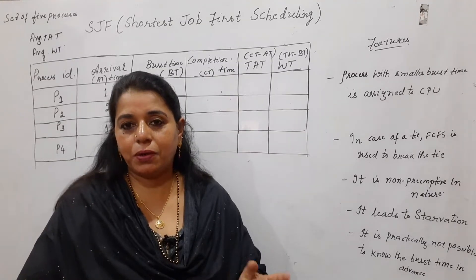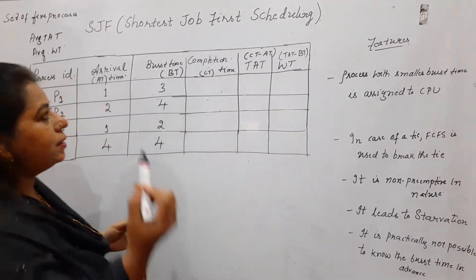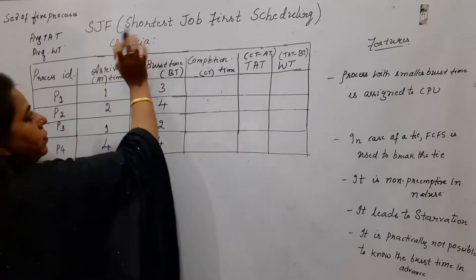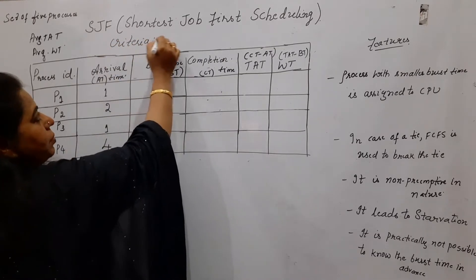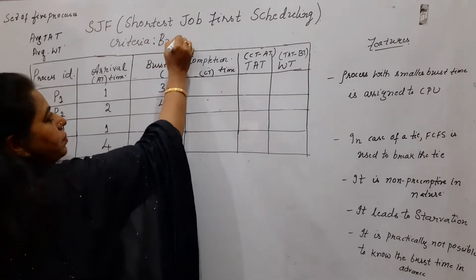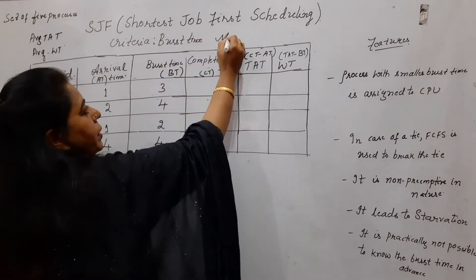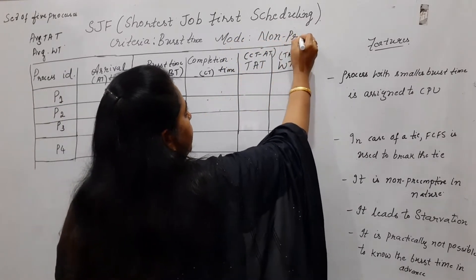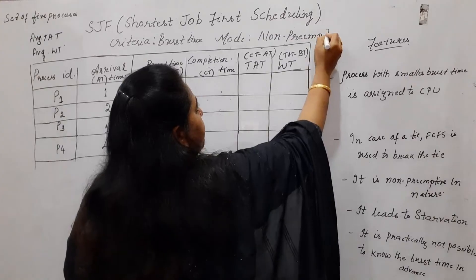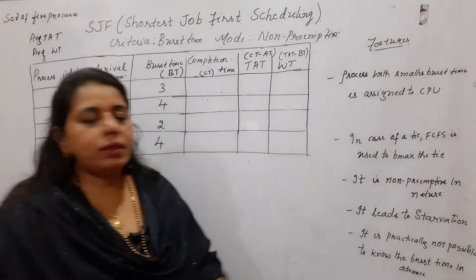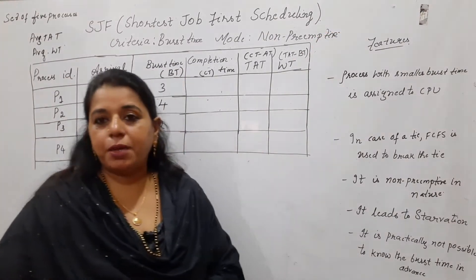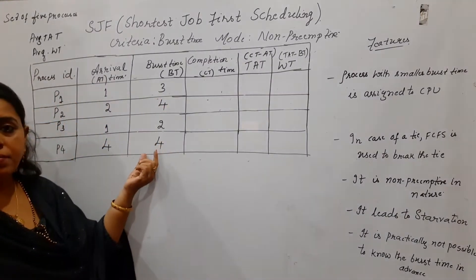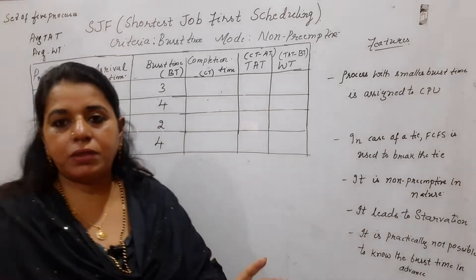These two things you should first know. The criteria is the burst time. The mode of operation is non-preemptive — this is also non-preemptive like FCFS. The logic is: the process with the smaller burst time is assigned to the CPU. Whichever process has the smaller burst time will be scheduled first.